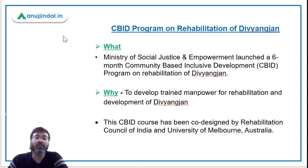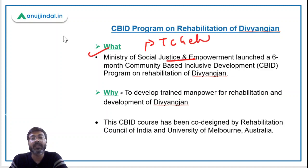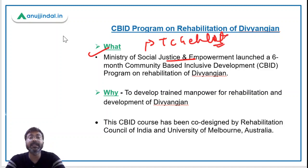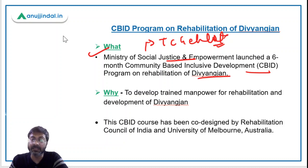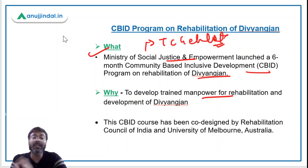The Ministry of Social Justice and Empowerment, which is headed by Mr. Tawar Chand Gehloth — who is the minister and also the leader in Rajya Sabha — launched a six-month community-based inclusive development program for persons with disabilities or Divyaang Jan. This program has been launched to develop trained manpower for the rehabilitation and development of Divyaang Jan.